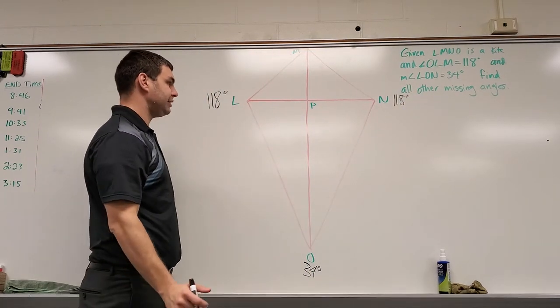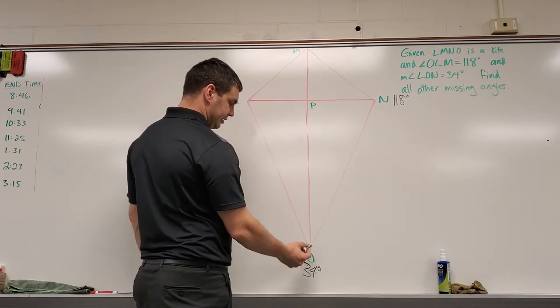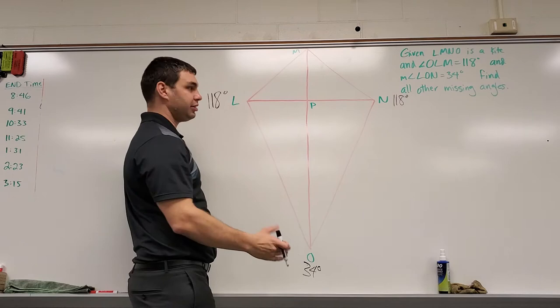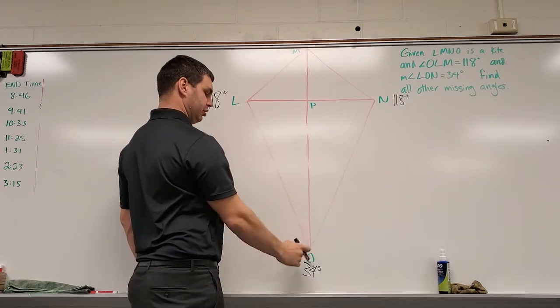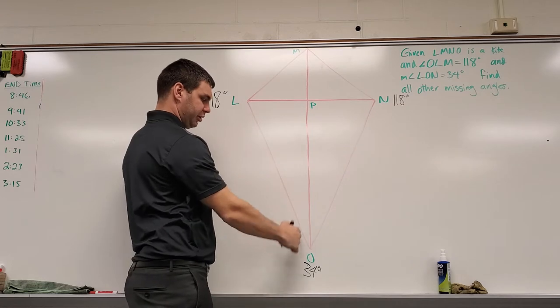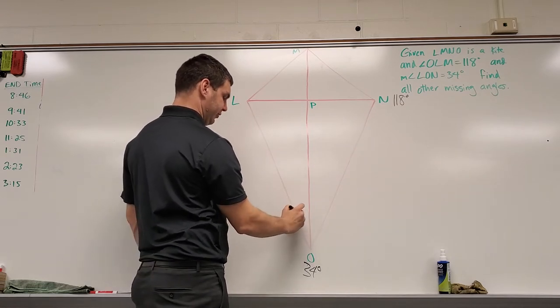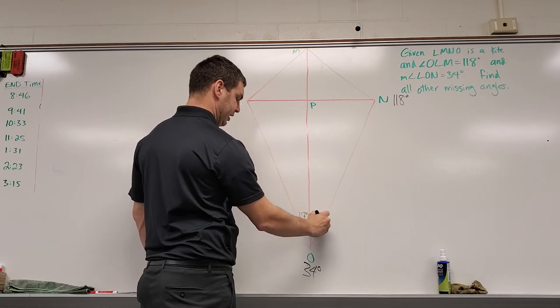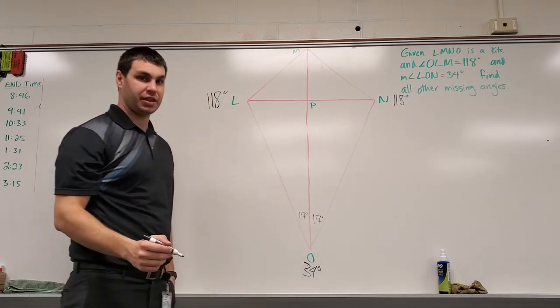All right, besides that, we know that the shoulders, and the head and the feet, if you will, this diagonal cuts those angles exactly in half. So if this is 34, these have to be 17. 34 divided by 2 is 17 degrees for this one and this one, those are both 17.